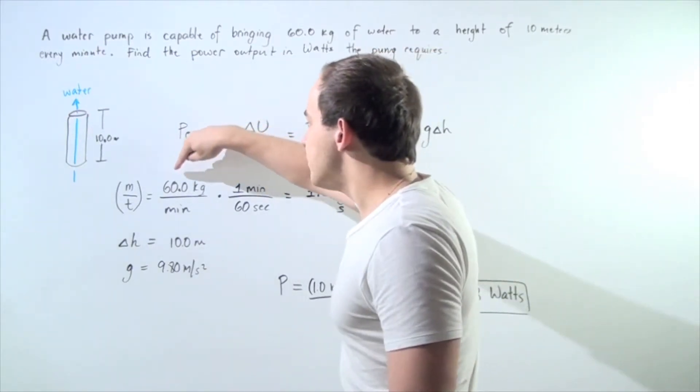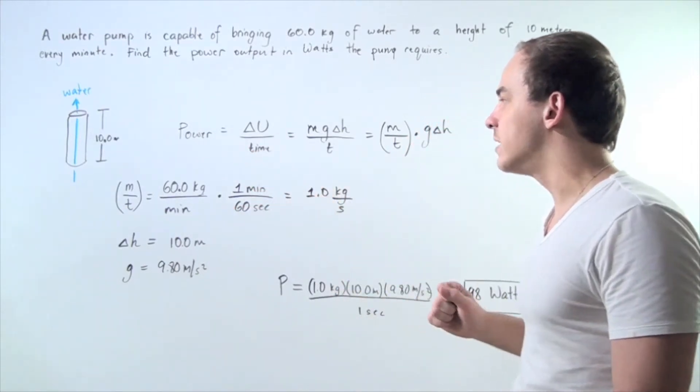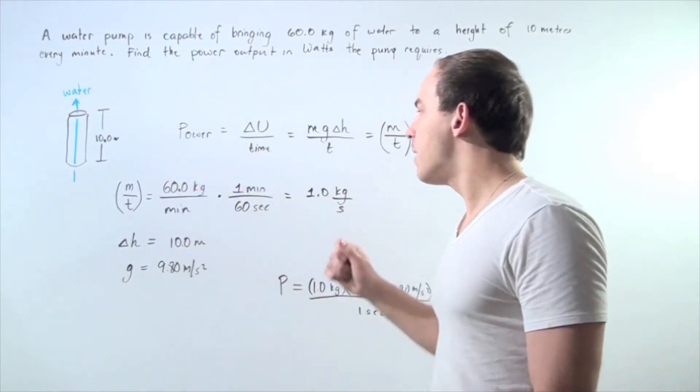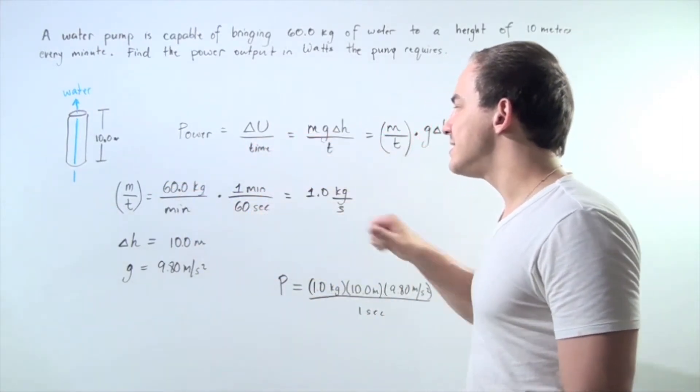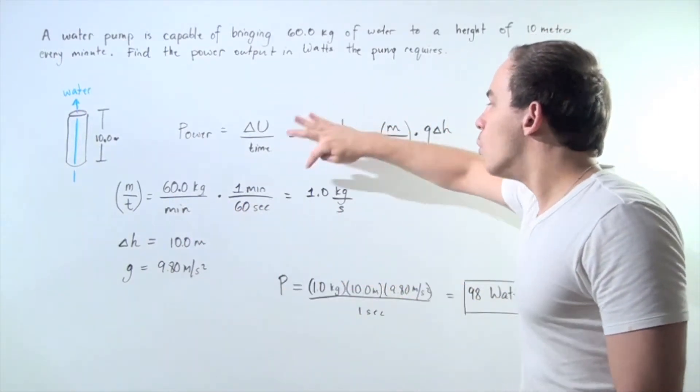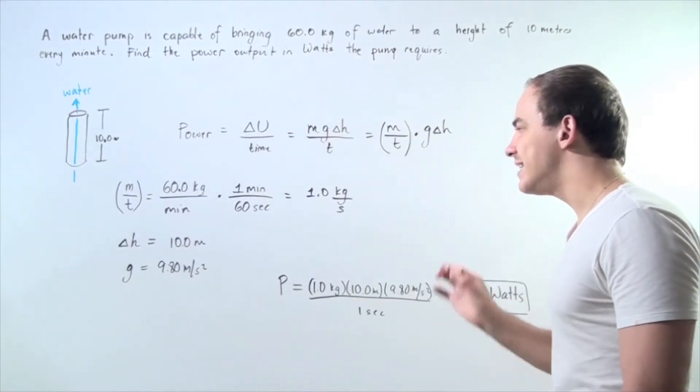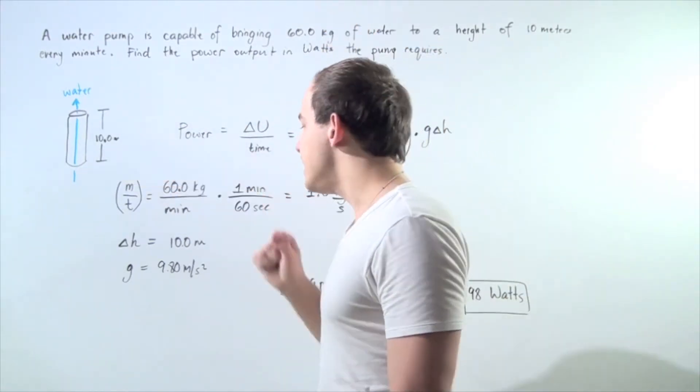We are given 60 kilograms per minute and we want to convert that to kilograms per second. We multiply 60 by 1 minute every 60 seconds. We are dividing 60 by 60 and we get 1 kilogram of water is pumped every single second, a height of 10 meters.